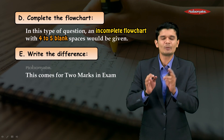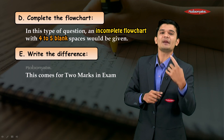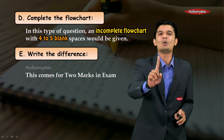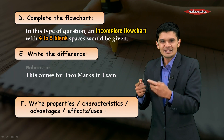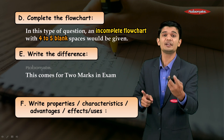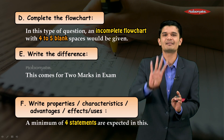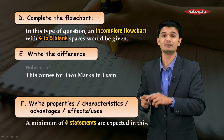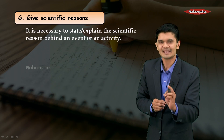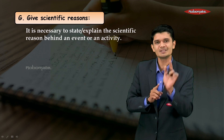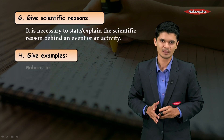You might also come across write the difference between or distinguish between questions — these are also very scoring. When you study these questions, you also end up completing your simple definitions and one-mark questions. You'll also come across write properties, characteristics, advantages, effects, and uses — make sure a minimum of four statements are written for these. You'll also find give scientific reasons questions, where it is necessary to state and explain the scientific reason behind the event or activity asked.